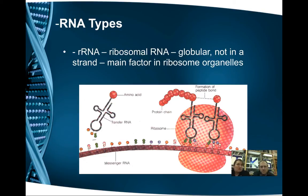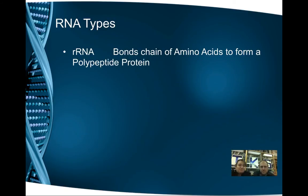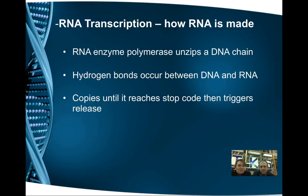We can build all kinds of stuff out of that, and the order of that chain tells us what type of protein and therefore what type of cell is going to be built. This process is called transcription — when you take DNA and make RNA out of it.